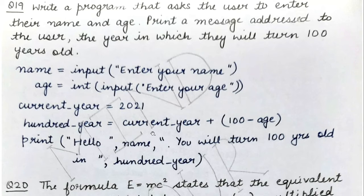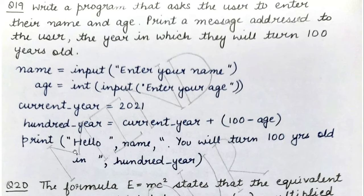The formula applied is current_year + (100 - age). For example, if someone is currently 20 years old, this becomes 2021 + 80. Since the print statement needs to include both the user's name and the calculated hundredth year, I wrote: 'Hello [name], you will turn 100 years old in [year],' where the name and computed year are inserted accordingly.